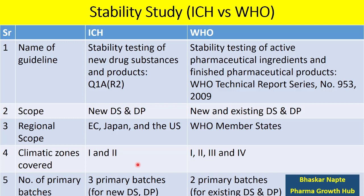What about the number of primary batches? ICH requires three primary batches for new drug substances and new drug products. In the case of WHO, if the product is already existing and found to be stable, then two primary batches can suffice the requirement. Otherwise, three primary batches need to be charged for stability for both drug substances and drug products.